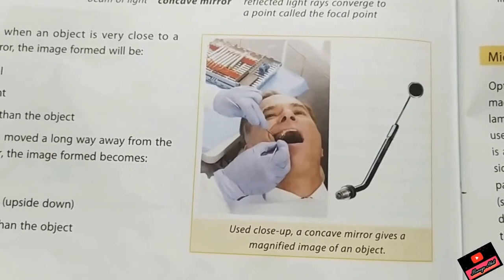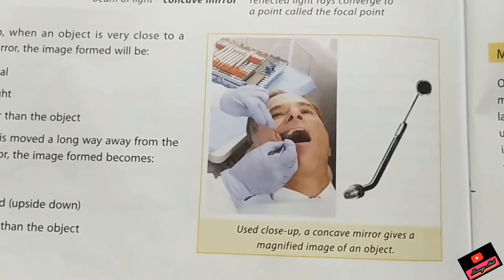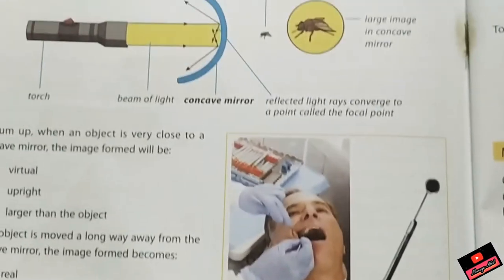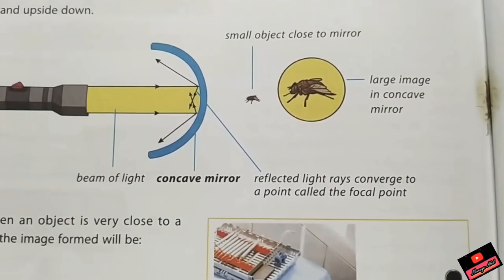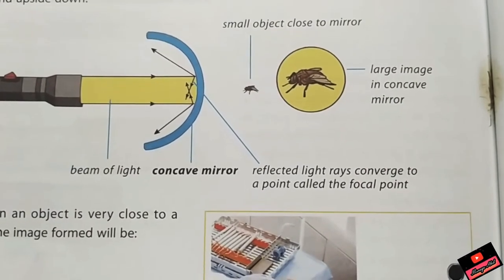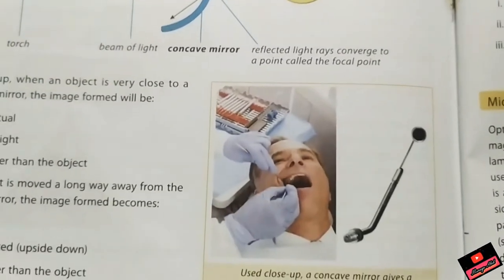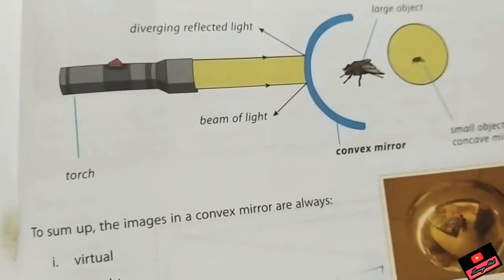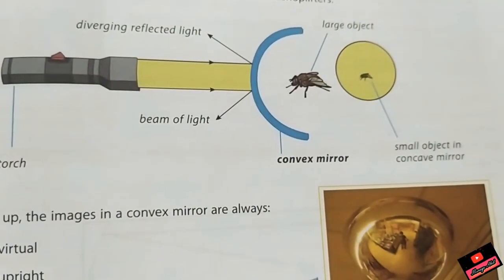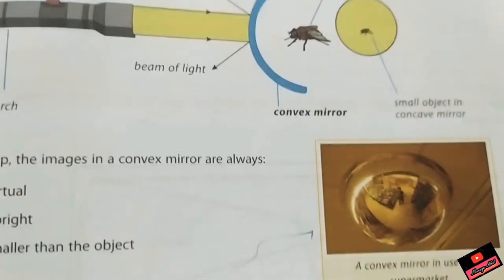See the comparison again: If a dentist is there, he is mostly using a concave mirror because concave mirror makes the small object's image bigger. The image from a concave mirror is bigger than the object, and the image from a convex mirror is smaller than the object.